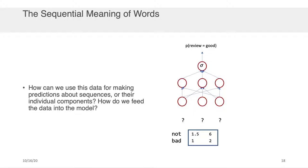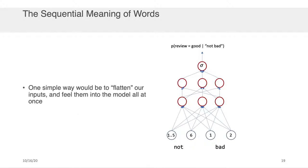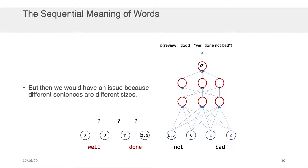Now how can we use this data for making predictions about sequences or their individual components? Or another word is, how do we feed this data into a model if we want to make a prediction using it? Well, one simple thing you could do is you could just flatten out the input representation. So not, for example, was a two-dimensional embedding 1.5, 6 and bad was a two-dimensional embedding 1, 2, and what we could do is we could flatten it out so that we have a 1 by 4 vector and that gets fed into a neural network to predict some output that we might care about, for example whether a movie review was good given that we saw the text not bad. Now that would work well if we only ever had two words that we were classifying at a time, but what would we do if we had sentences of different sizes? For example well done, not bad. How do we go about integrating this information without training a brand new model, one that's catered to four words, one that's catered to three words and so on, which could get onerous very quickly.